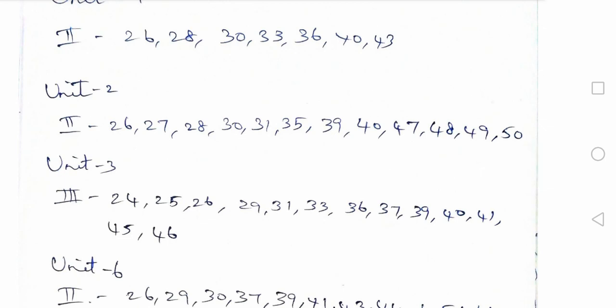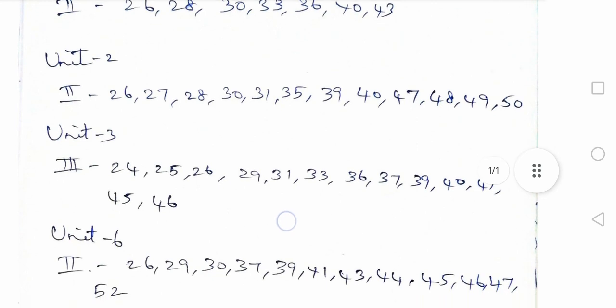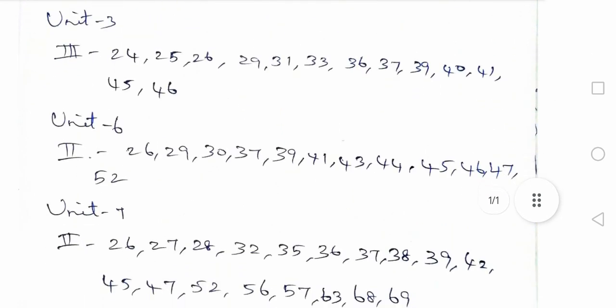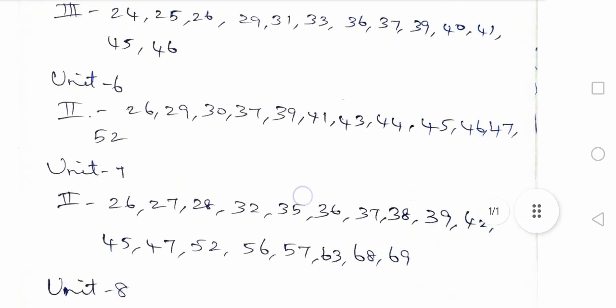Unit 3, 3rd Romalateral: 24, 25, 26, 29, 31, 33, 36, 37, 39, 40, 41, 45, 46. And also Unit 6, 2nd Romalateral: 26, 29, 30, 37, 39, 41, 43, 45, 46, 47, 52. This question is about to go.